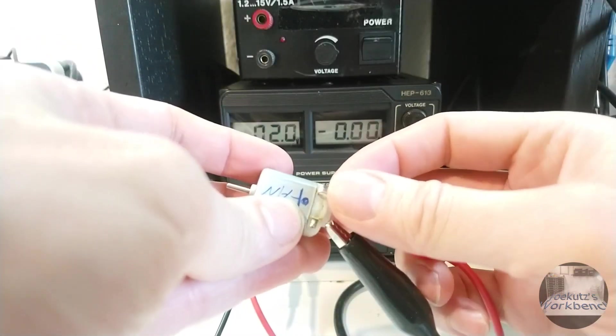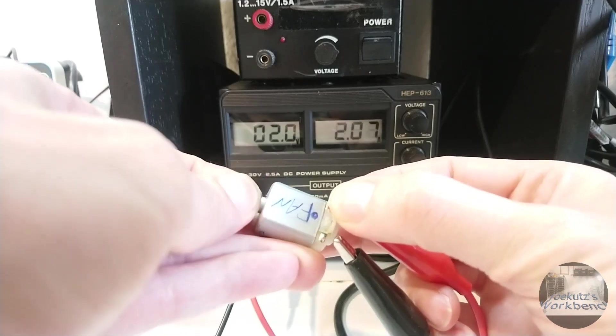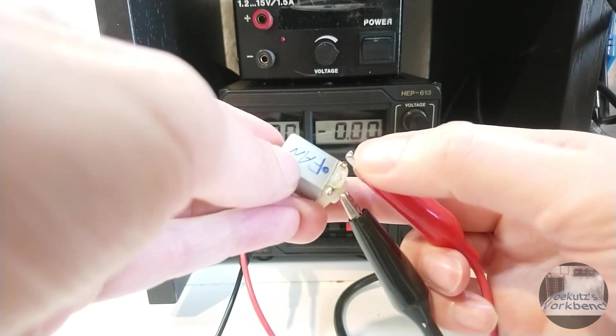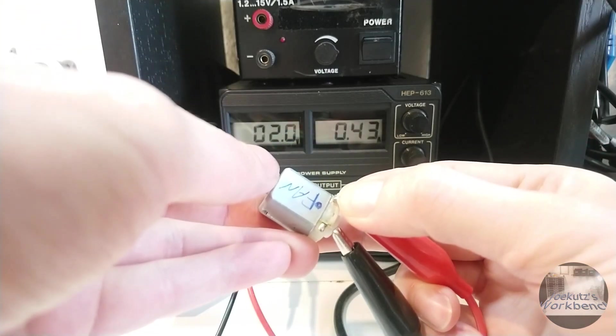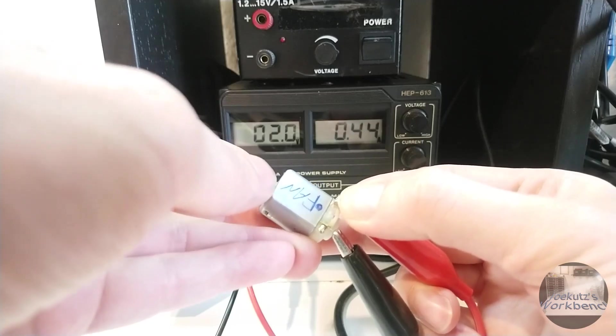Time for some measurements. Here is one of the fan motors. At 2 volts it takes almost 450 milliamps just idling. And when I stall it, the current goes up to nearly 2 amps. Ouch!